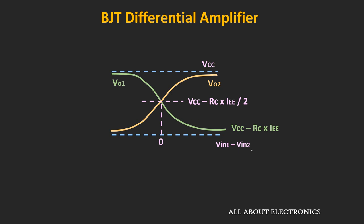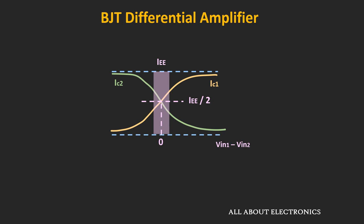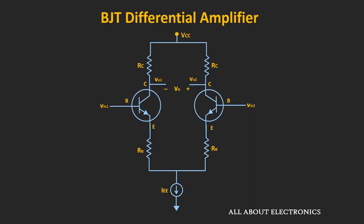When the differential input is zero, Vo1 and Vo2 both equal Vcc minus Rc times Iee divided by 2. For non-zero differential input voltage, the outputs vary accordingly. As you can see, only for a very small differential input range is the collector current and differential output voltage linearly proportional to the differential input. For the differential amplifier to work in the linear region, the differential input should be very small — typically less than Vt divided by 2, or less than about 10 mV.